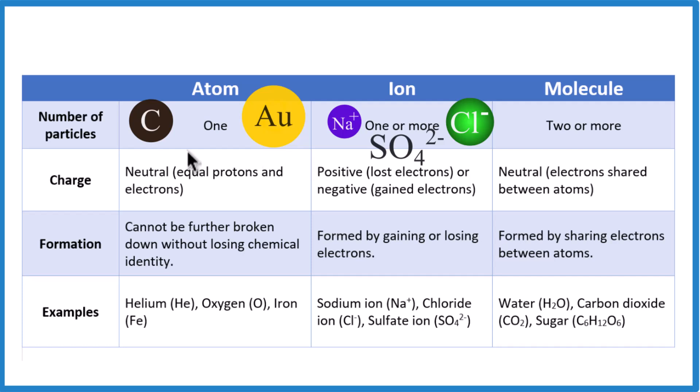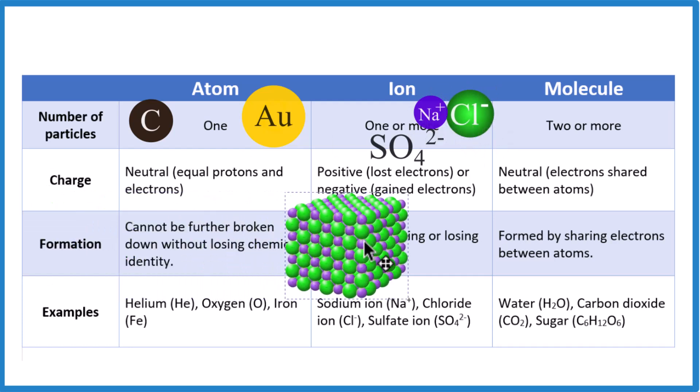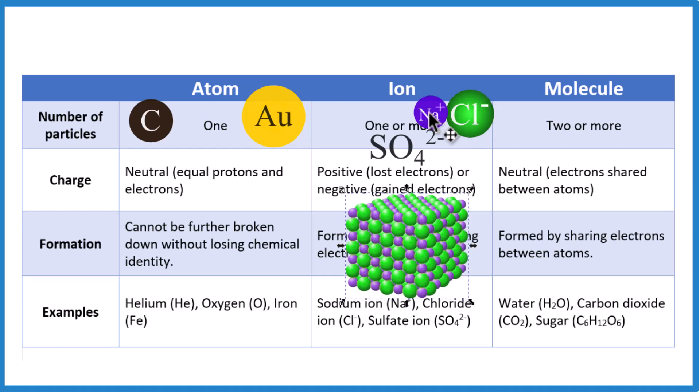And ions form by gaining or losing electrons. So here's sodium. It formed when it lost an electron to chlorine. We end up with NaCl. And that's actually going to be a crystal. So this is called an ionic bond. And then we'll have these repeating patterns of NaCl in a crystal. So those are ions.